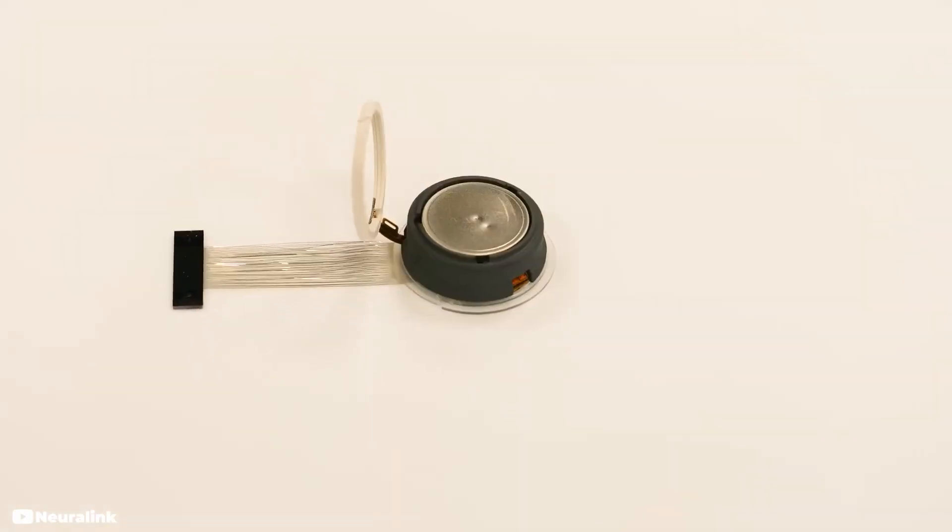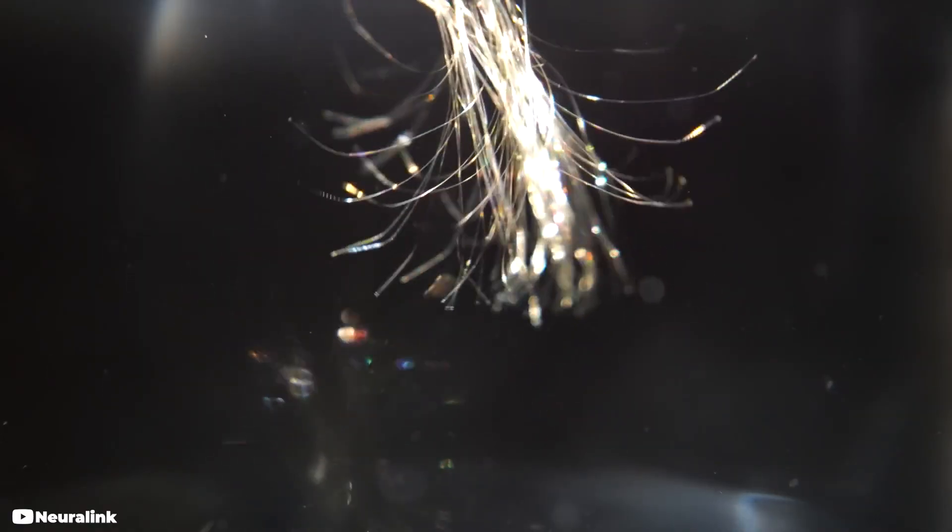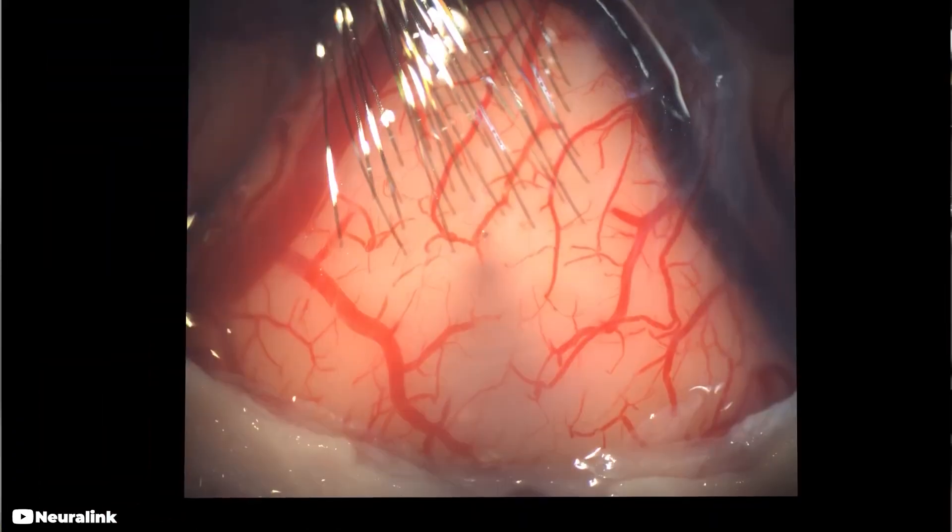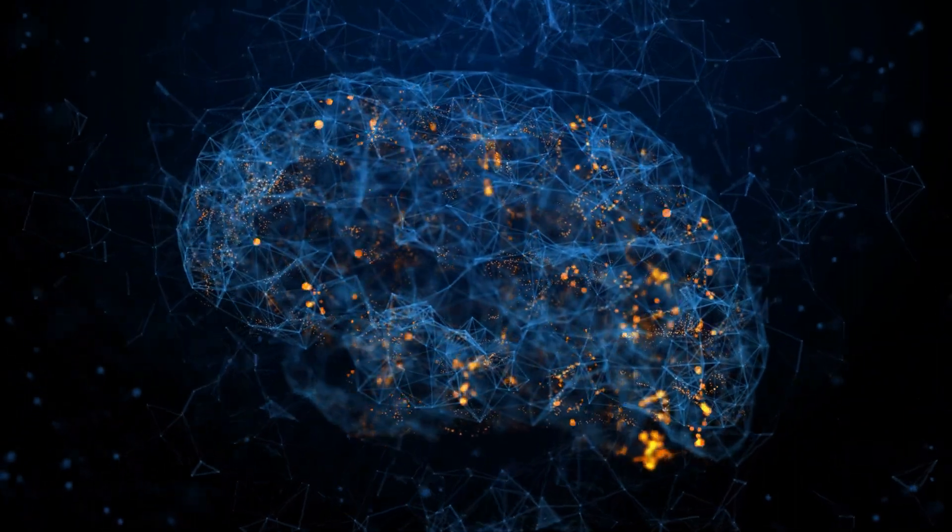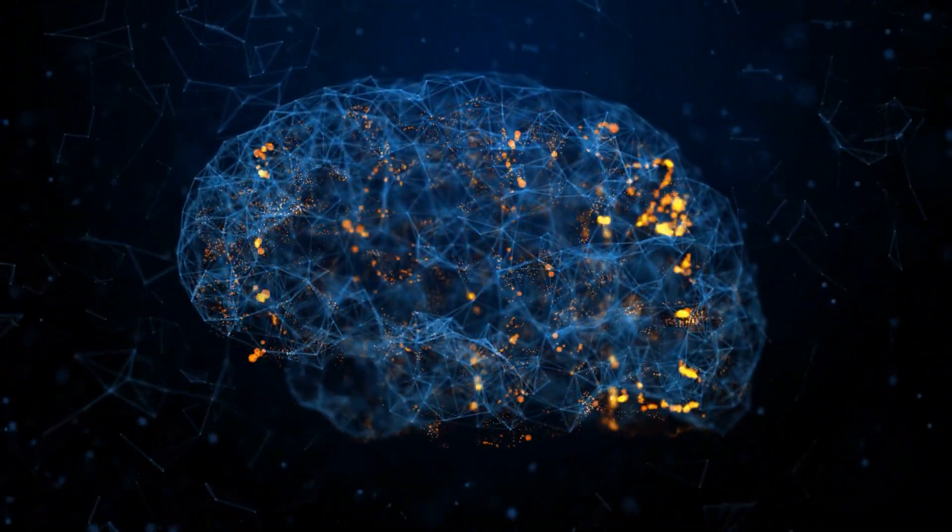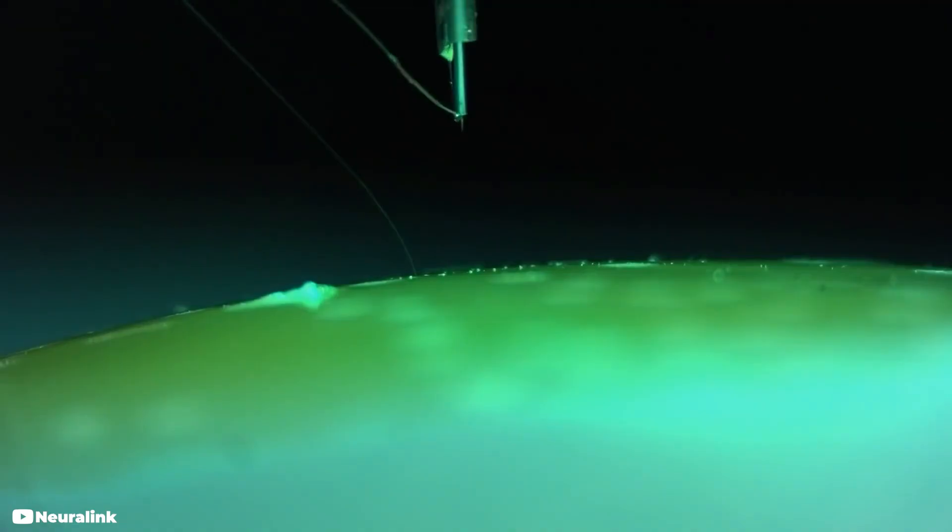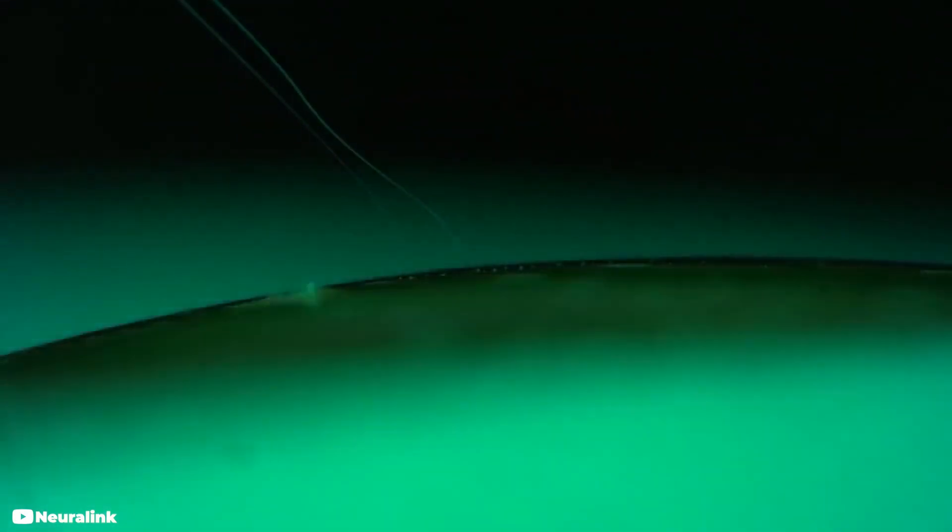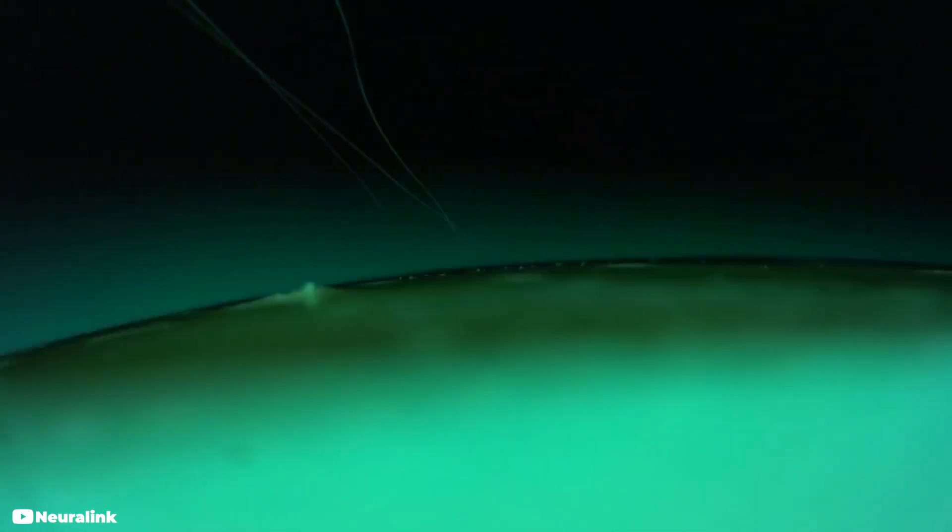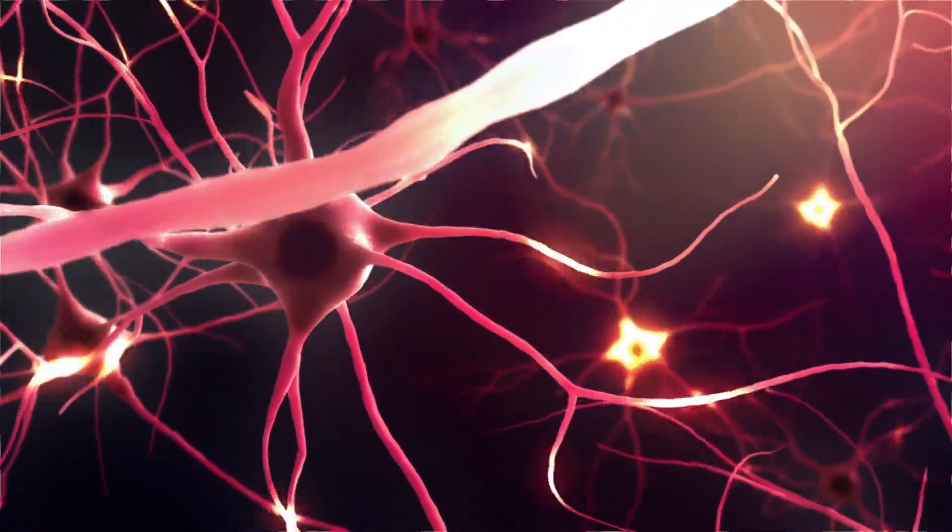The technology is still in its early stages, and we don't know what the long-term effects of having wires implanted in our brains could be. One of the primary concerns is the potential for brain tissue damage if the implant fails. Neuralink incorporates a lithium battery that can be charged remotely, and if it fails, it could damage brain tissue. There is a possibility that the implant's wires could travel to other parts of the brain, which could cause harm or interfere with normal brain function.